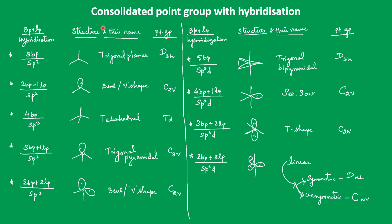Here is a consolidated point group with hybridization. For three bond pairs without any lone pair, the hybridization is SP2, the structure is trigonal planar, and the point group is D3H.